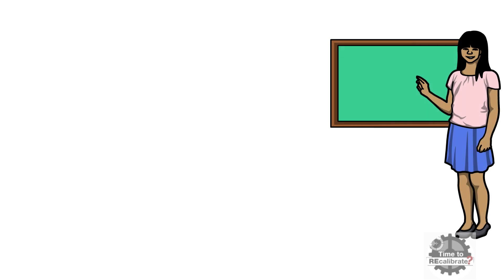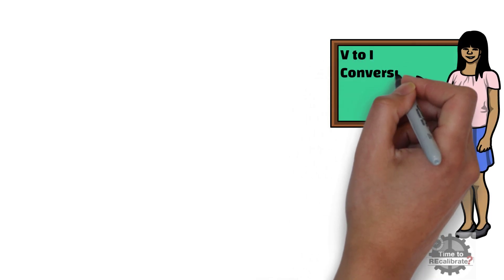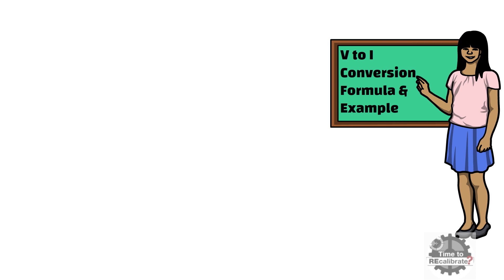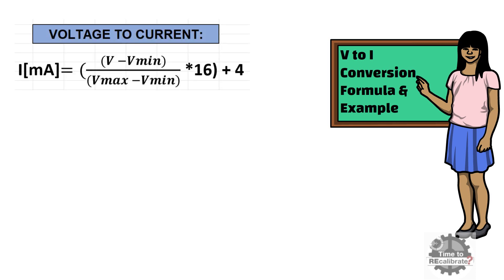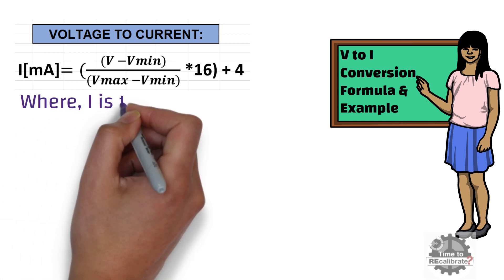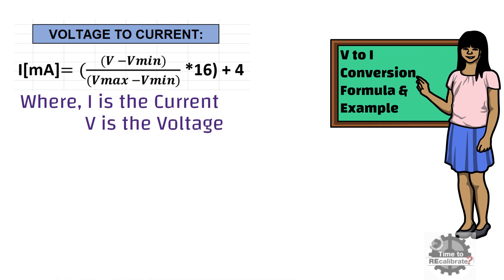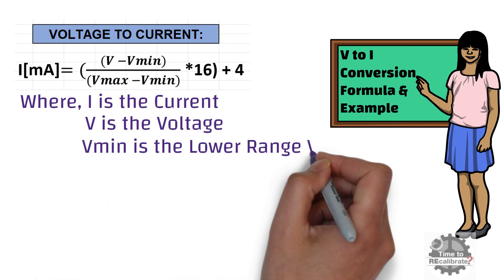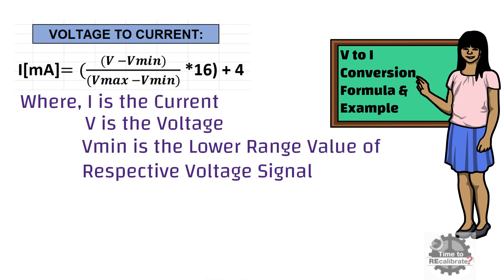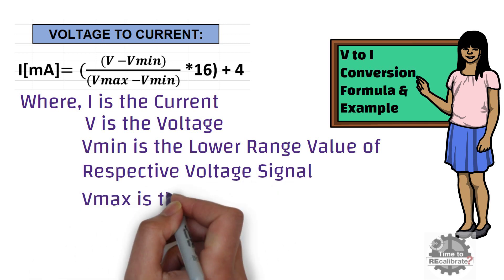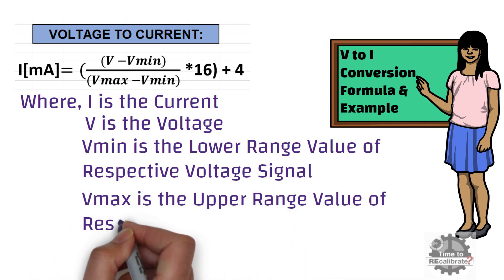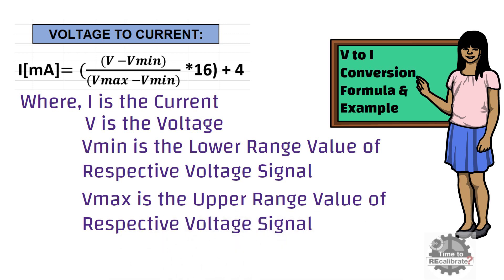Let's start with the voltage to current conversion formula and its example. As you can see, this is the standard formula to convert voltage into current. In this equation, I is the current and V is the voltage. Vmin is the lower range value of the respective voltage signal, and Vmax is the upper range value of the respective voltage signal.